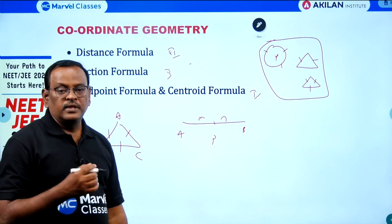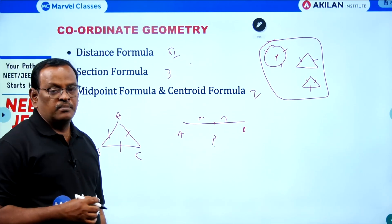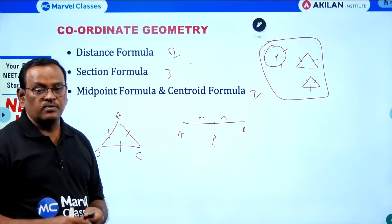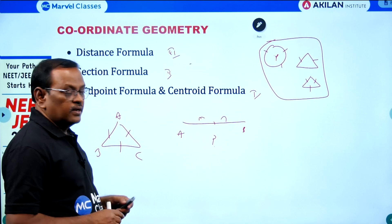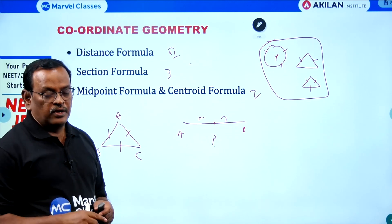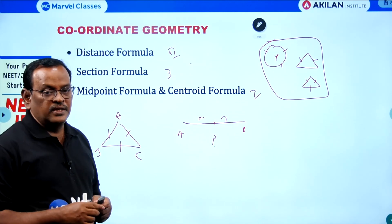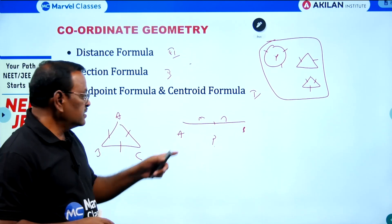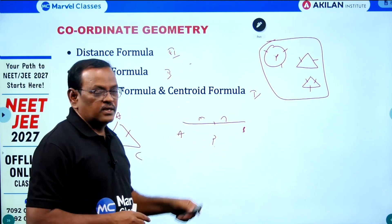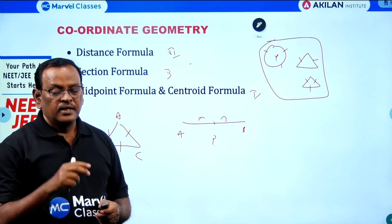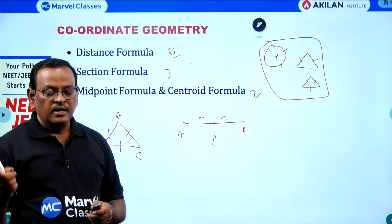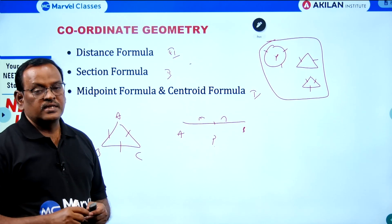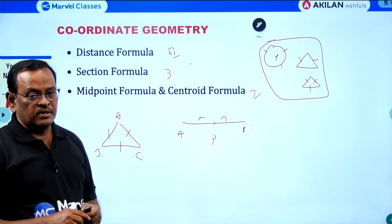Whenever you need to prove that something is a parallelogram, always follow this method — the condition for a parallelogram is that midpoint of AC equals midpoint of BD. This is one of the simplest and most important approaches. For centroid, you have only two types of problems: if three points are given, find the centroid; if the centroid is given, find the third vertex. Also, the derivation of the centroid formula is one important question.